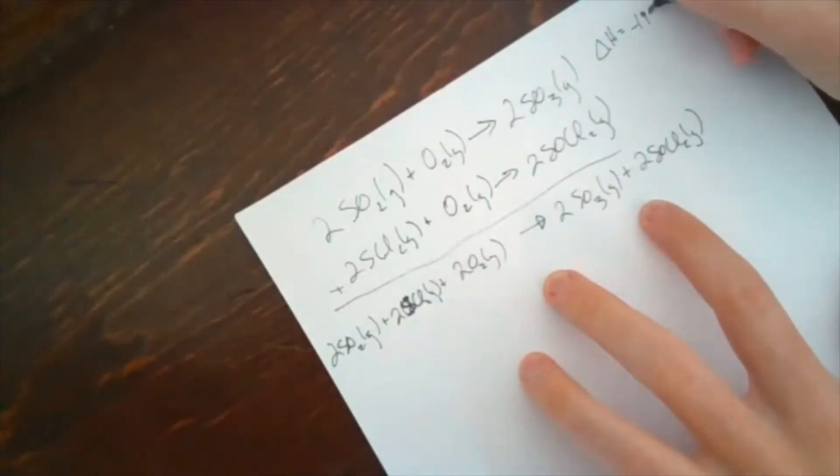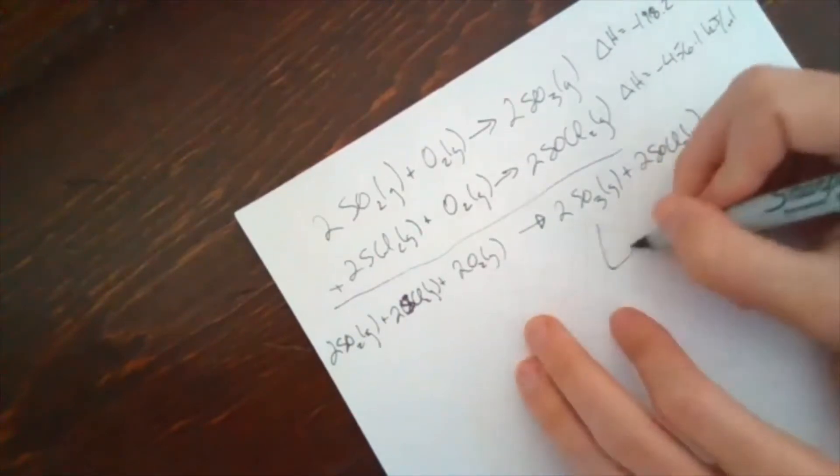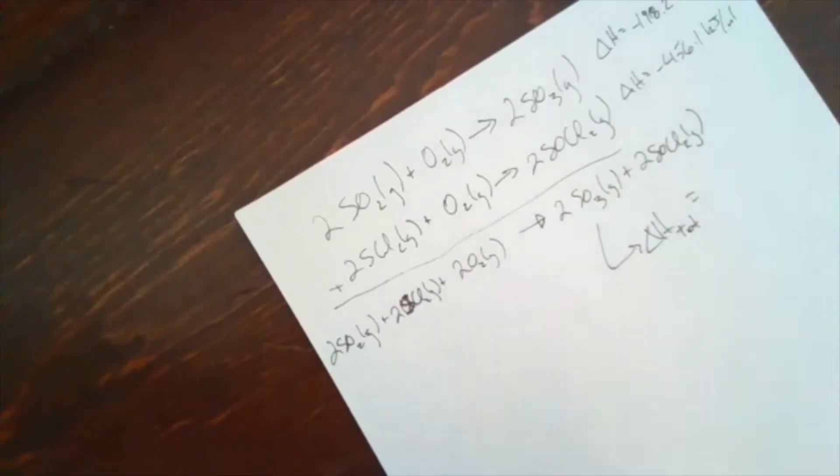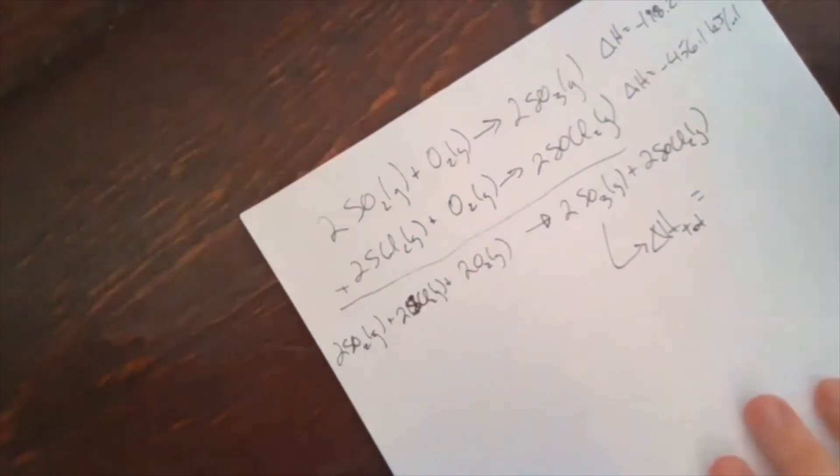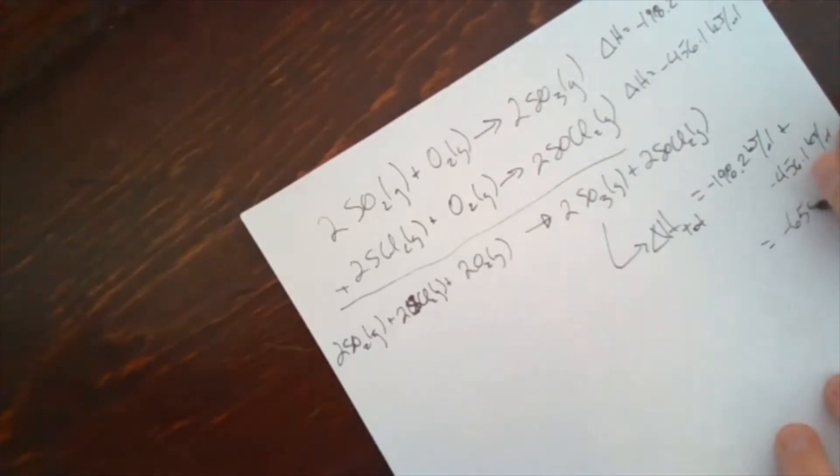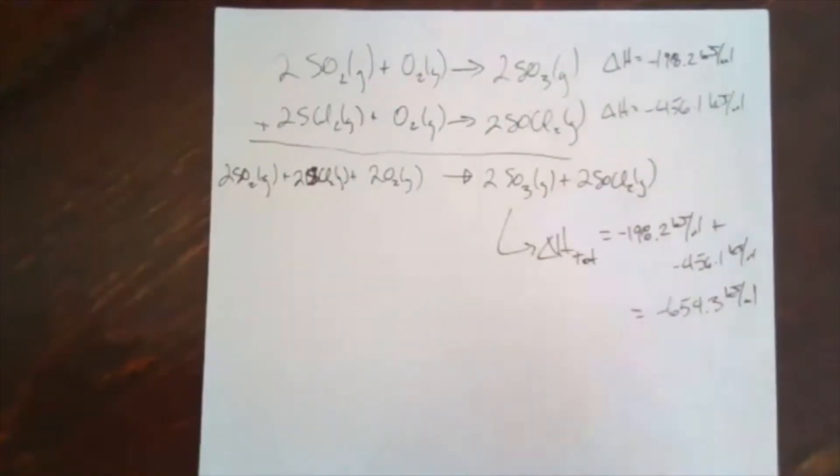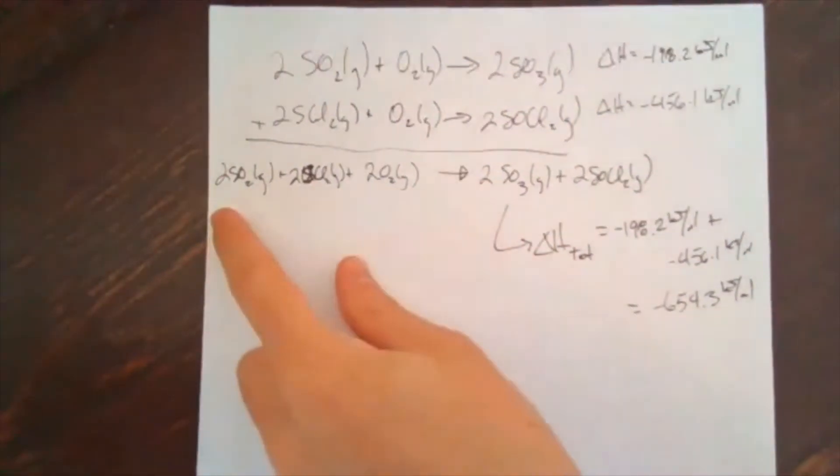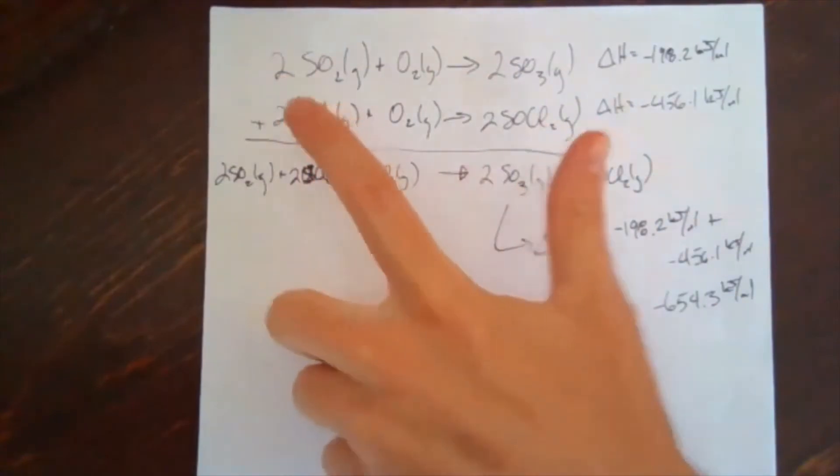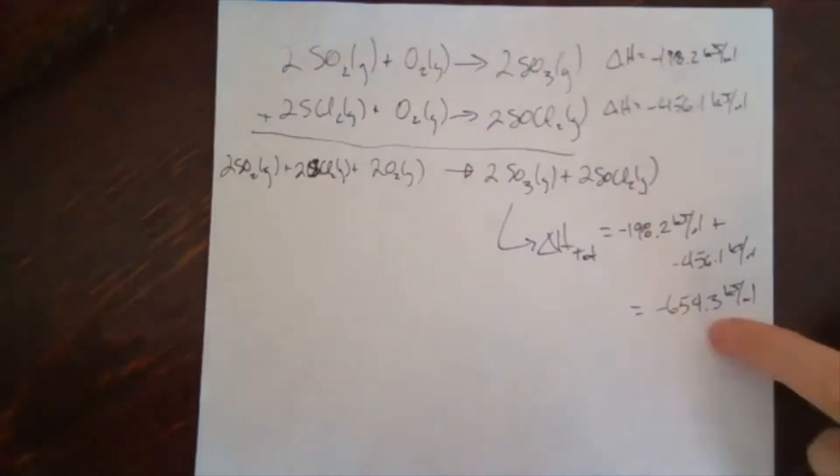We know the delta H of this one is negative 198.2 kilojoules per mole. The delta H for this reference is negative 456.1 kilojoules per mole. So for this, your delta H for that total reaction is going to sum up. You just add those two together. It's going to be negative 198.2 kilojoules per mole plus negative 456.1 kilojoules per mole, which gives you a nice total of negative 654.3. So if this is true, the enthalpy of this reaction is negative 654.3.